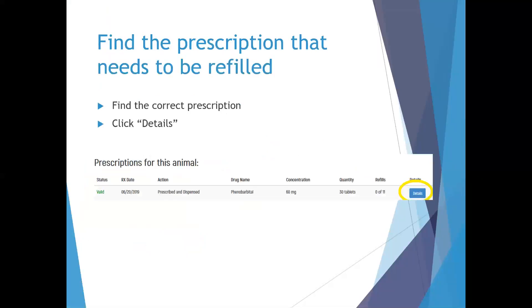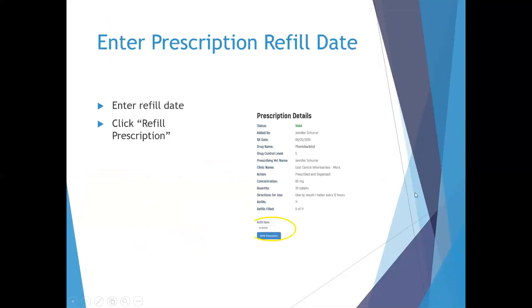At this point, you need to look through the pet's prescription drug history and find the prescription you are wanting to refill. For example, if I'm refilling the phenobarbital that was originally filled on June 20th, I would find this prescription and click the details button.